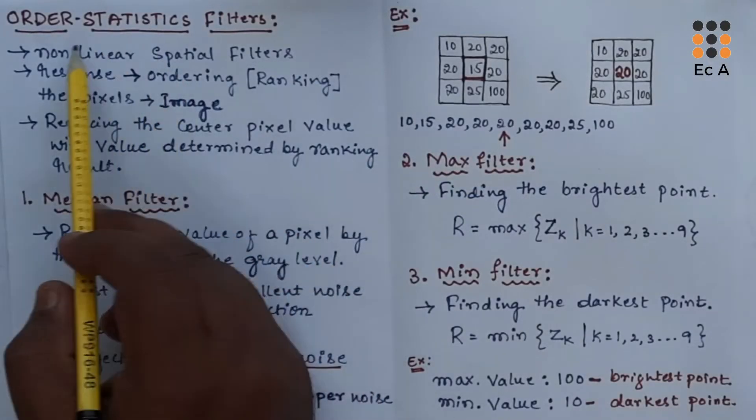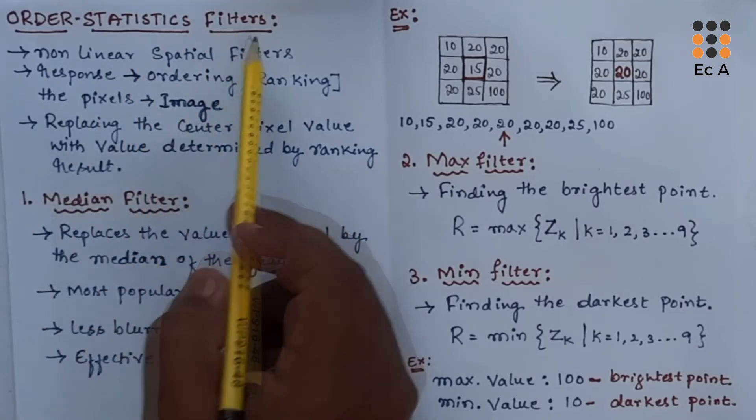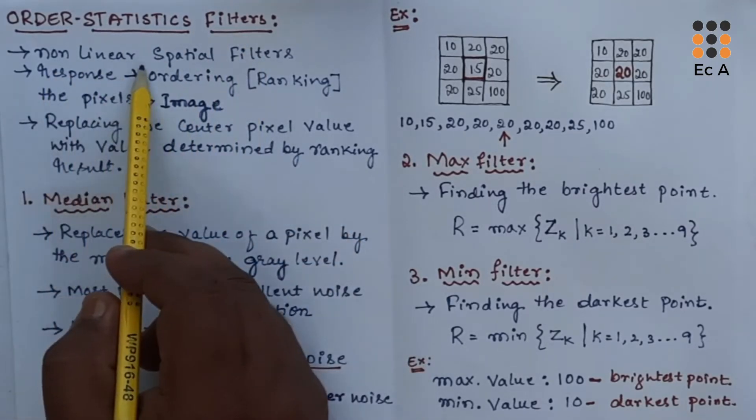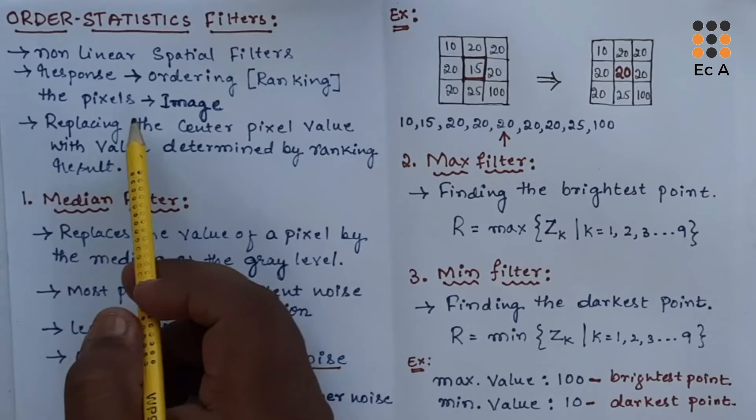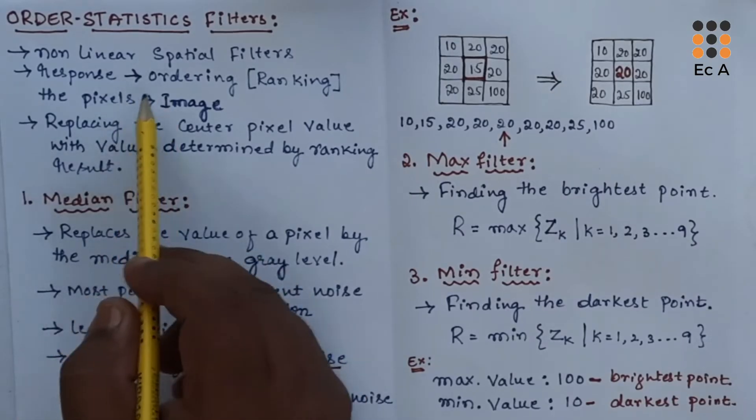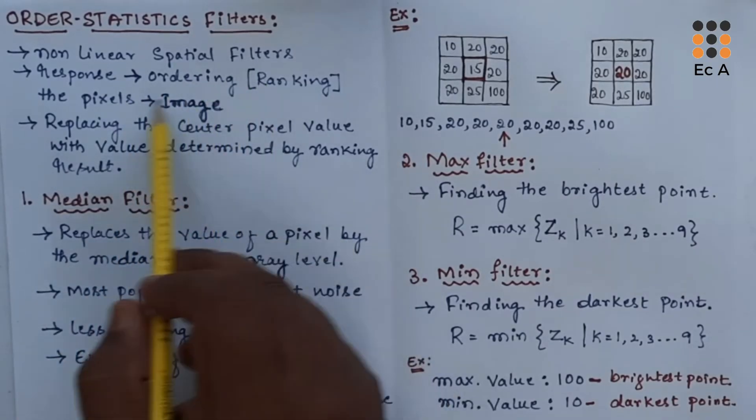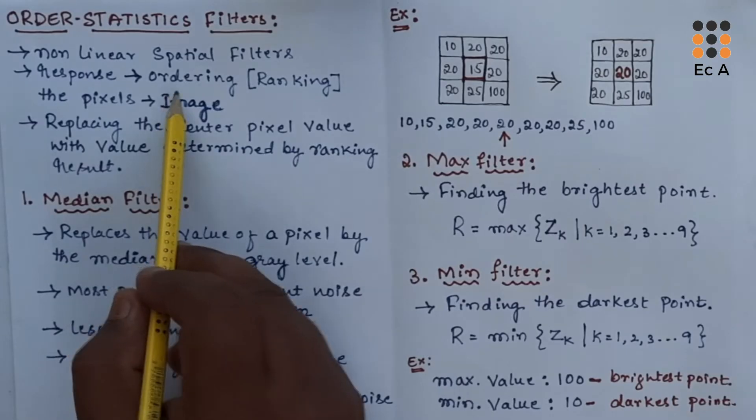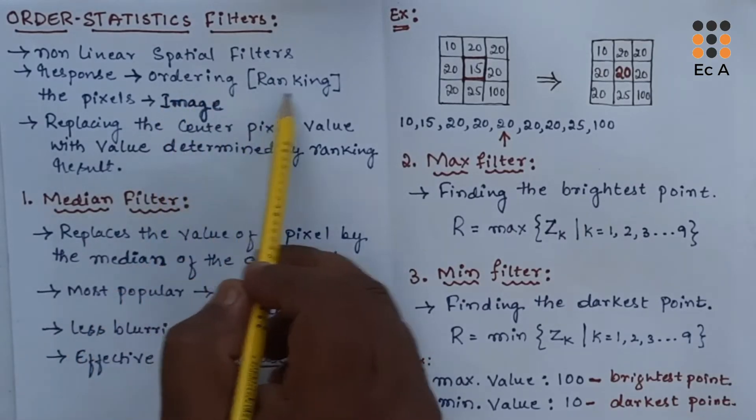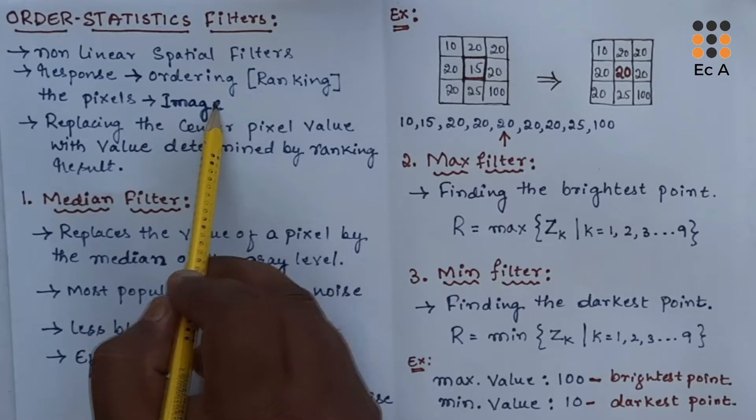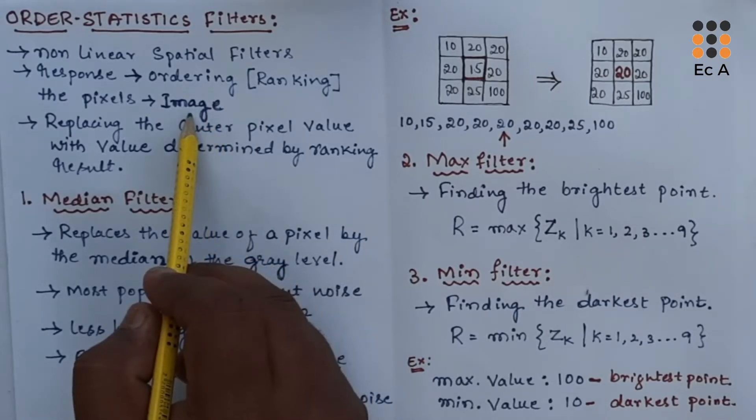In this lecture, let us understand order statistic filters, which are also known as nonlinear filters. Order statistic filters are nonlinear filters whose response is based on the ordering or ranking of the pixels in the image and composed by the filter.